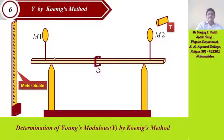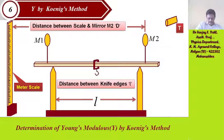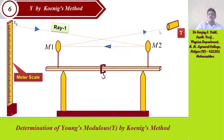All of the apparatus is now ready to take readings. The distance between the meter scale and mirror M2 is denoted as capital D, and the distance between the two knife edges is small l. With no weight applied, the initial reading x0 is taken. The ray is incident on mirror M2, reflects back to mirror M1, and whatever division appears on the meter scale is observed through the telescope and noted in tabular form.